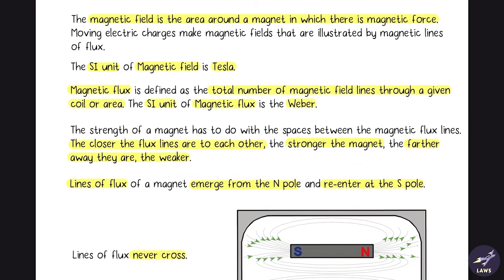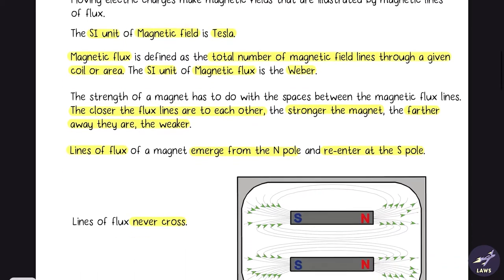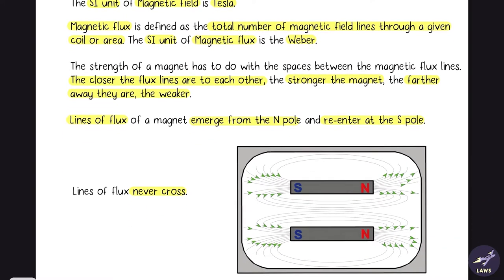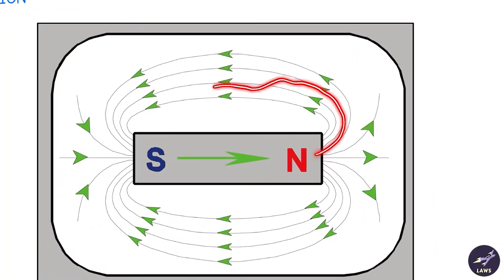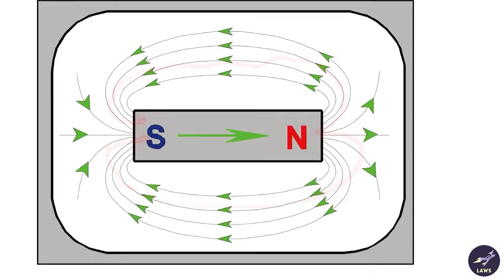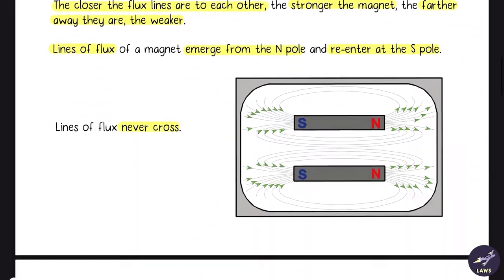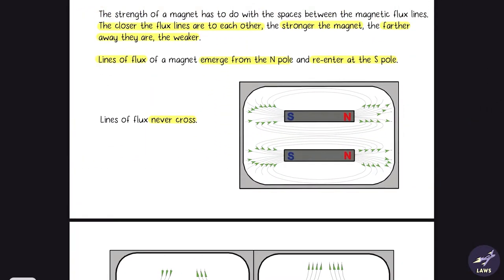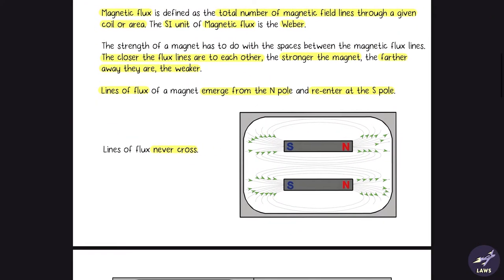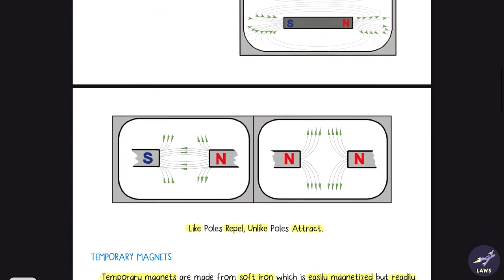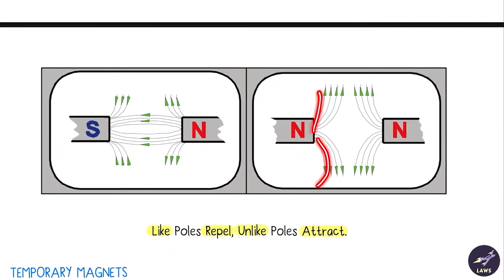The closer the flux lines are to each other, the stronger the magnet; the farther away they are, the weaker it is. Lines of flux emerge from the north pole and enter at the south pole. Lines of flux never cross or intersect. Like poles repel, unlike poles attract.